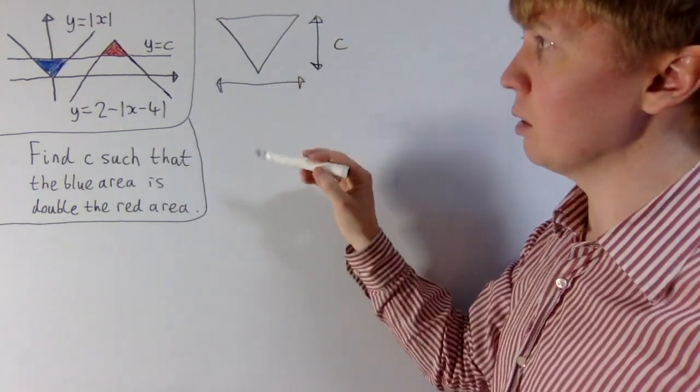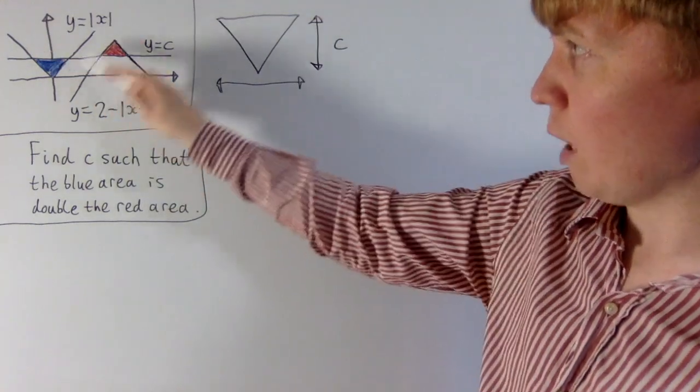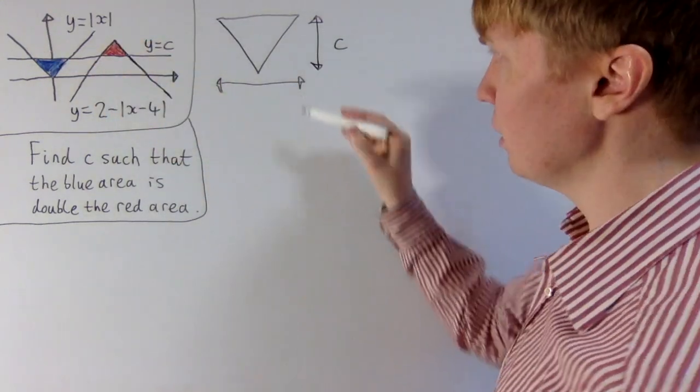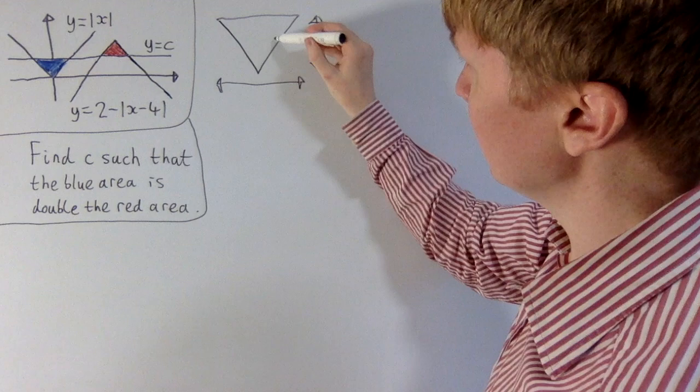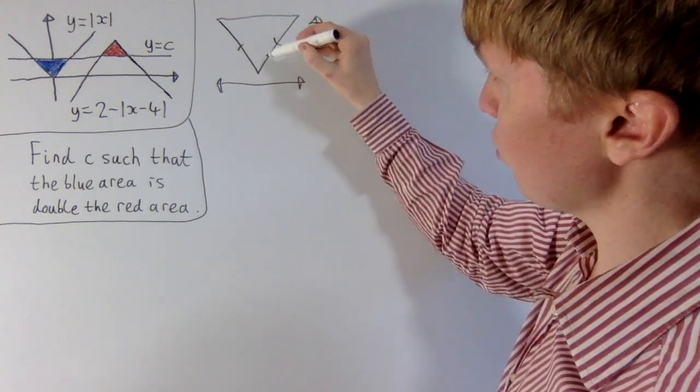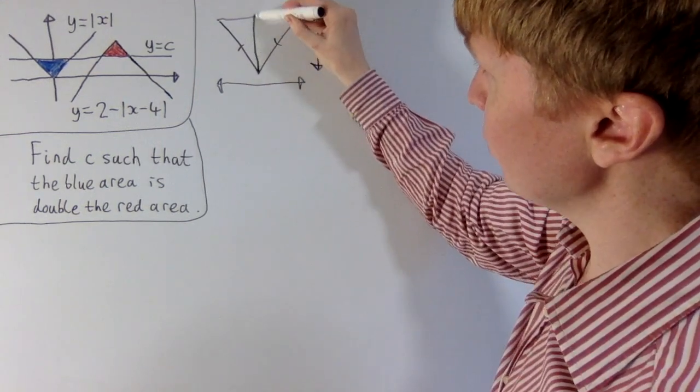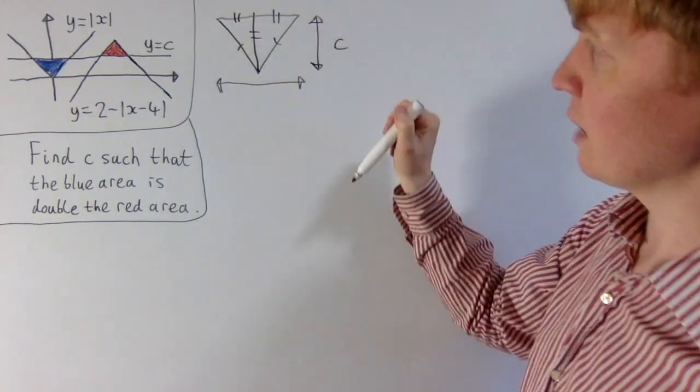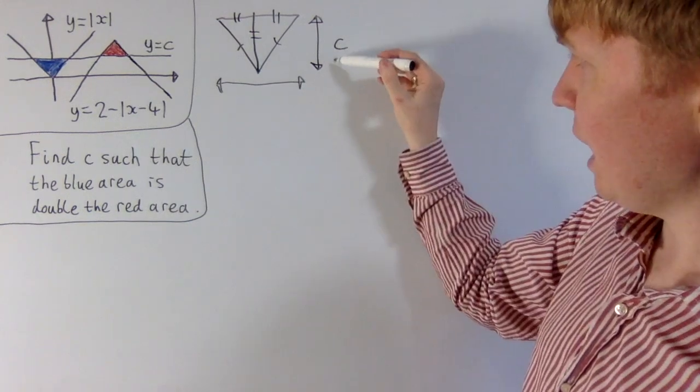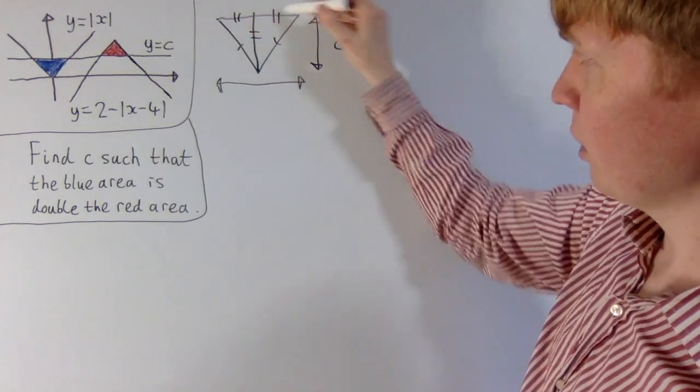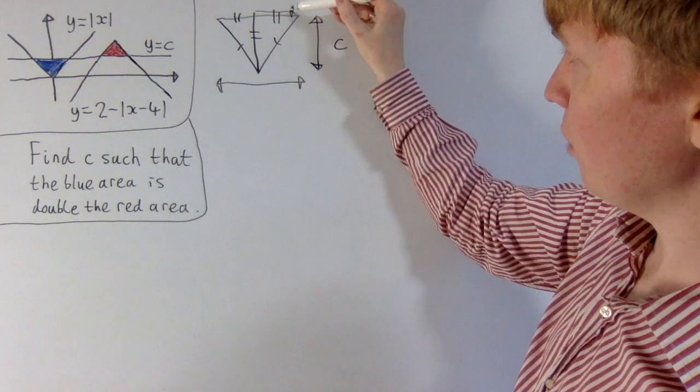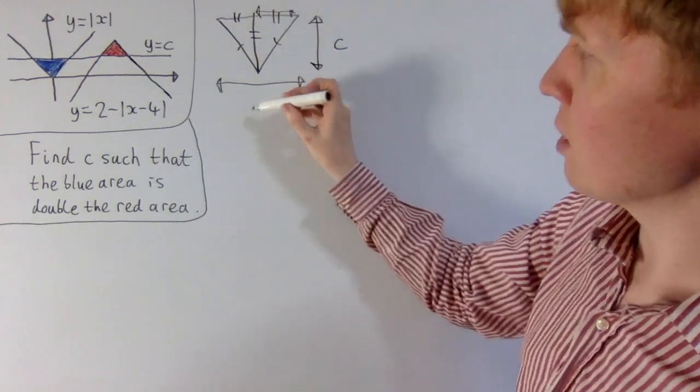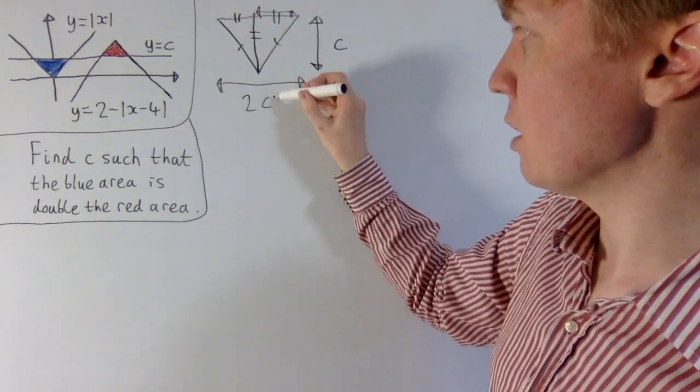Now if we want to find the width of the triangle, all we need to do is think, well we've got the graph of the absolute value of x here, which forms a 90 degree angle. And this gives us a nice isosceles triangle here. But not only that, if we split it up into two smaller triangles, we've also got two identical triangles here. So the height of this is actually the same as the width of half of our triangle, which is telling us then that the width of this triangle is 2c.